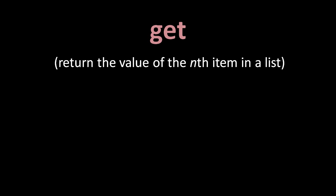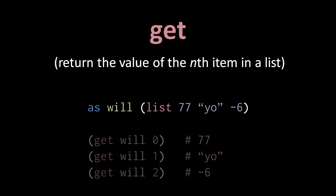To access the items of a list, we use the get operator, which takes two operands: first a list, and second the index of the item to retrieve from that list. Here we create a list of three items and assign the list to a variable will. The expression get will 0 then returns the first item in the list, get will 1 returns the second, and get will 2 returns the third.